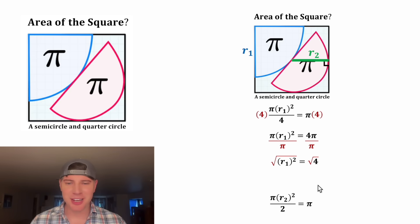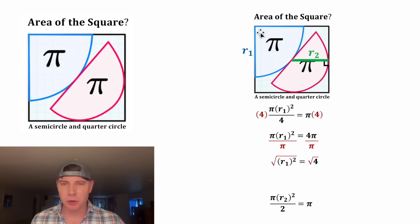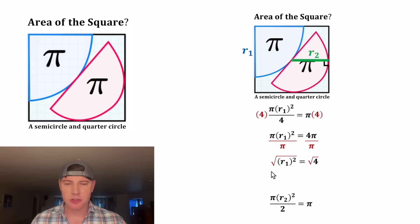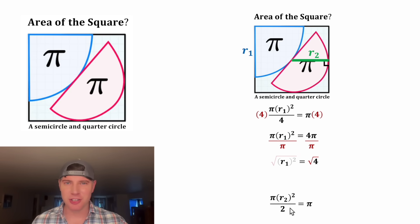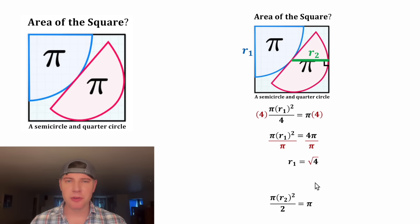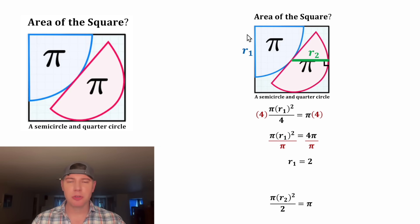From here, we can square root both sides. On the left-hand side, R sub one is a positive distance, so the square root and the square will cancel each other out, leaving us with R sub one. And on the right-hand side, the square root of four is two. So the radius of our blue quarter circle is equal to two.